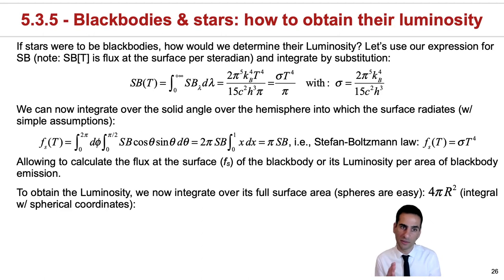What this allows us to do is to essentially calculate the flux at the surface of a blackbody or its luminosity per area. So remember that flux is luminosity per area of the blackbody emission, so it's not really a detector and we'll get to that. And therefore, if we actually want to obtain the luminosity, we need to integrate over its full surface area.